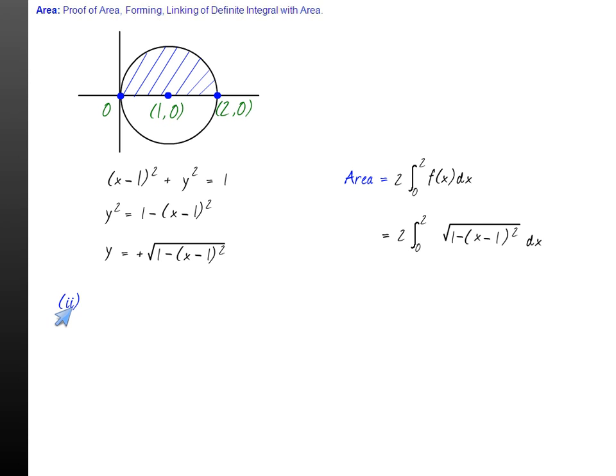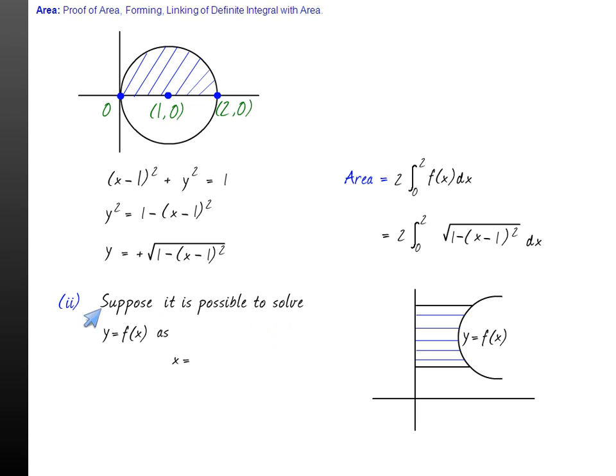The second point is area bounded by y-axis. At times the shape of the area we are interested in is like this. y equals f(x) is the curve. Suppose it is possible to solve x in terms of y and x equals g(y). These are the limits c to d. In this case the area is integral c to d g(y) dy or x dy.